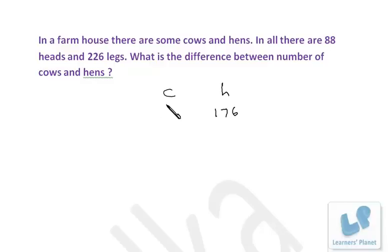Alternatively, I assume all of them are cows. Each cow has 4 legs, so 88 times 4, that is double of 176, or we can say 352 legs will be there.